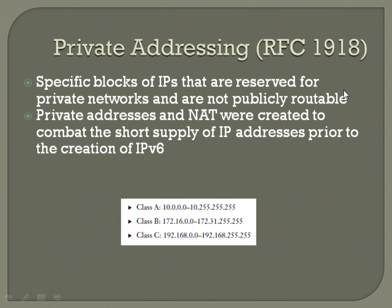Another range you might notice used frequently for private addressing is 7.0.0.0. Those are not actually private addresses — they're IPs owned by the Department of Defense, but they are not publicly routed by the DoD. So we're able to use that as an additional private space, since we've got such a large MPLS network. And then subnetting IP blocks — that's what we talked about a second ago with Variable Length Subnet Masking.